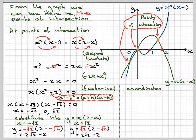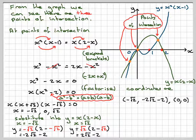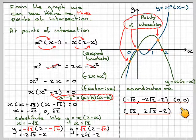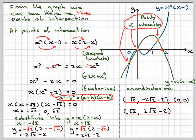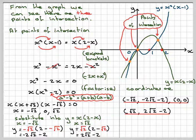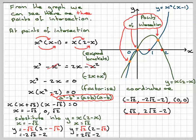Therefore the coordinates of the points of intersection are (-√2, -2√2 - 2), (0, 0), and (√2, 2√2 - 2). This video has shown you how to plot two curves on the same axis and then find the coordinates of their points of intersection.